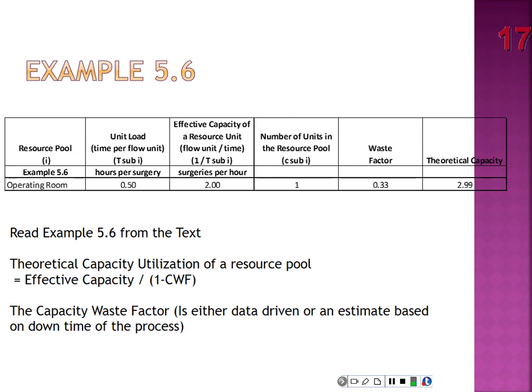Example 5-6: consider an operating room that specializes in cataract surgery. On average the hospital performs a surgery every 30 minutes — that's the unit load — so effective capacity is 2 cases per hour (1/0.5 = 2). The hospital uses one operating room. Suppose 33% of operating room time is wasted: cleaning, restocking, changeover of nursing staff, fixing malfunctioning equipment, and so on.